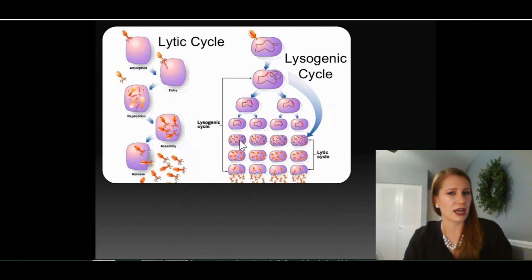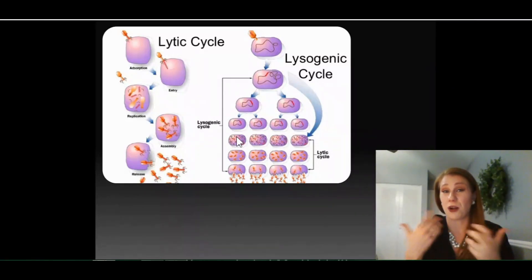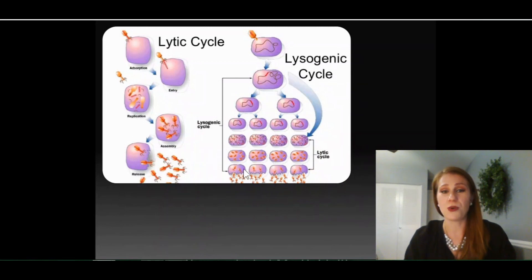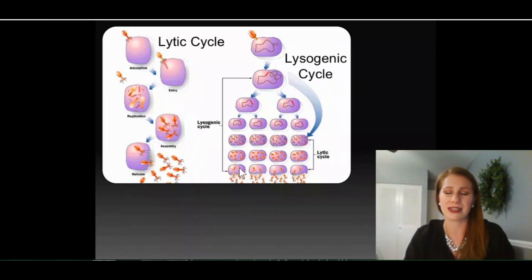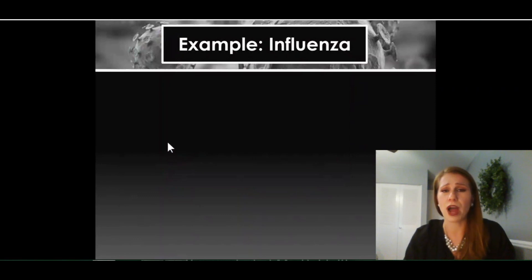But once it turns lytic and your cells start to assemble new viruses and replicate the viral DNA, you're in trouble. Because now instead of having one cell bursting, you have hundreds or thousands or millions of your cells all bursting at the same time. Lysogenic is definitely the slower cycle — I remember it by saying lyso equals slow, because it can take years. On the other hand, lytic — the only thing I've found to rhyme with it is 'lytic is quick,' and it's going to happen very rapidly.